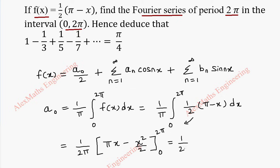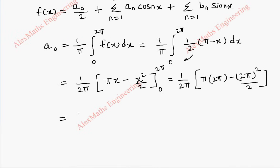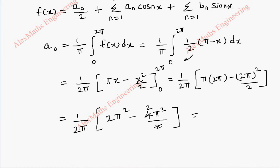When I substitute the upper limit 2π, the first term is π·(2π) − (2π)²/2. The lower limit gives 0. So we have (1/2π) times [2π² − 4π²/2], which simplifies to 2π² − 2π² = 0. So a0 = 0.